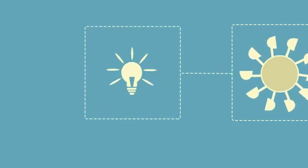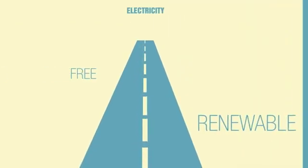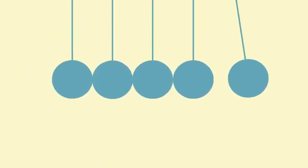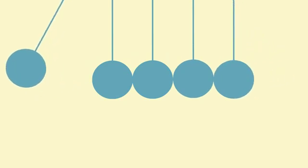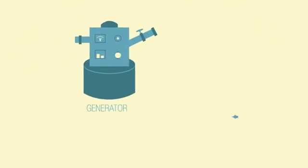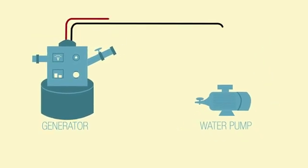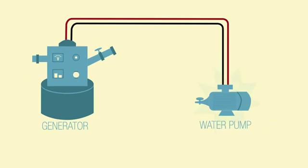Once it gets started, it will produce its own power. It sounds pretty far-fetched, I know, but all of this can be accomplished through a little something called the perpetual motion theory. Here's how it works. The generator runs on a closed loop. The water pump keeps the water moving through the generator, which in turn keeps the generator generating. The pump uses just a little bit of that electricity to keep the water moving. It's that simple and it really works.